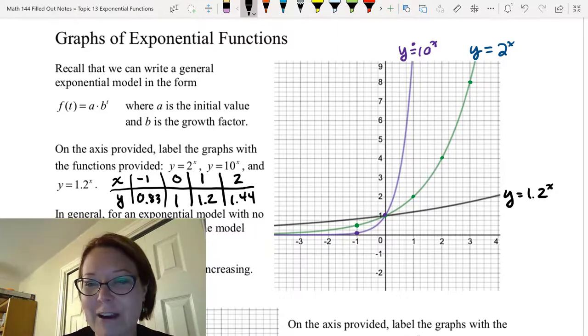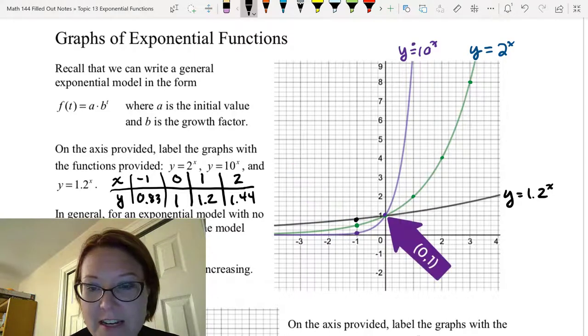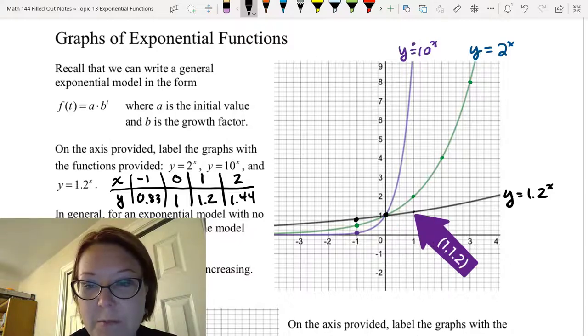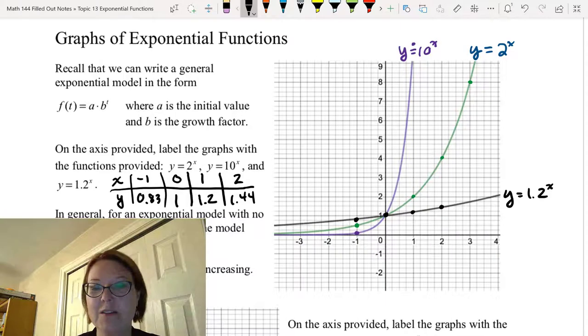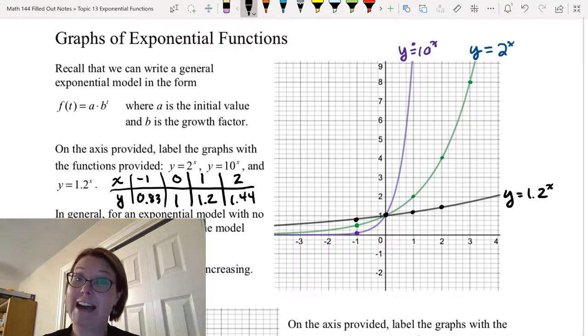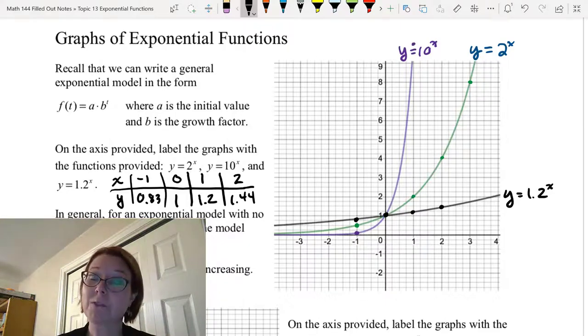So let's just write 0.83 in our table. Let's just verify that against the graph that we have: negative 1, 0.83, looks right; 0, 1 looks right; 1 comma 1.2 and then 2 comma 1.44. And see this graph is definitely a lot flatter than the other graphs. It doesn't increase nearly as quickly. It's a very slow increase. And it is the graph that is furthest away from the y-axis to the right.